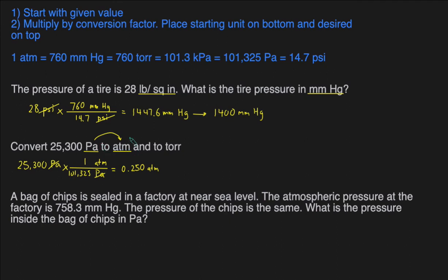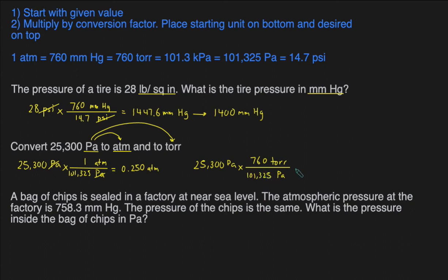The second part is converting Pascals to Torr. I'll start with the original Pascals: 25,300 Pa multiplied by the conversion factor. Put Pascals on the bottom to cancel, and Torr on top. The conversion factor has 760 in front of Torr and 101,325 in front of Pascals. The Pascals cancel out and we're left with Torr. We plug in 25,300 times 760 divided by 101,325.